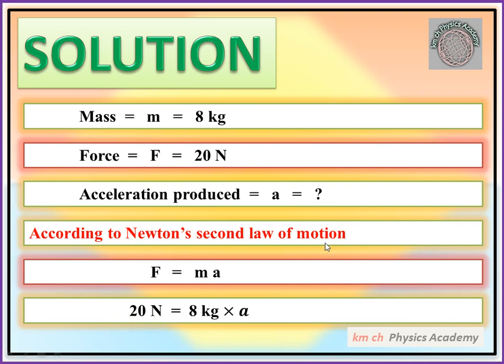According to Newton's second law of motion, F equals ma. So 20 N equals 8 kg times a.